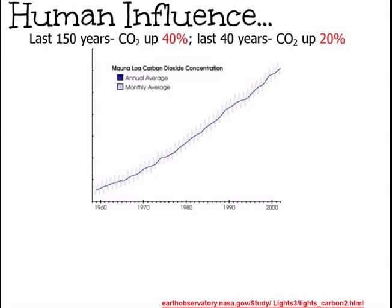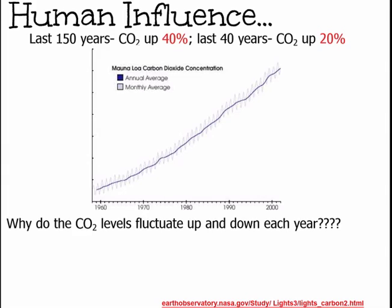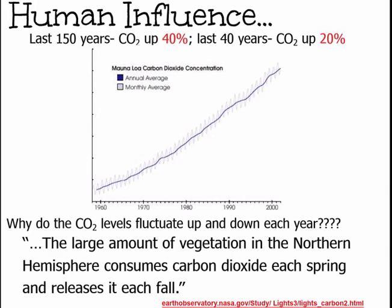Looking at the human impact on the carbon cycle: in the last 150 years, carbon dioxide levels have increased 40%, and in the last 40 years, CO2 has gone up another 20%. The graph shows CO2 levels rising from 1960 to past 2000. You'll notice a zigzag line — CO2 goes down in spring and summer and up in winter. This is because the large amount of vegetation in the northern hemisphere consumes CO2 each spring when leaves emerge, but when leaves fall in autumn, there's nothing to pull CO2 from the atmosphere and levels increase.